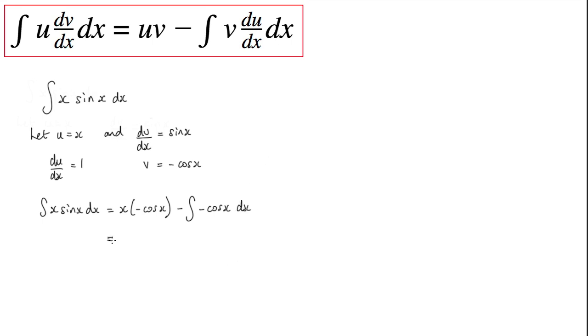Let's go ahead and simplify this a little bit. So x times minus cos x will be minus x cos x. I've got two negatives here, so I can change this to positive the integral of cos x dx.